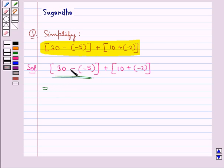Here we have 30 minus minus 5. Now, minus of minus 5 would be plus 5.